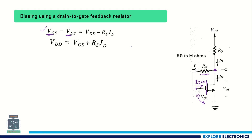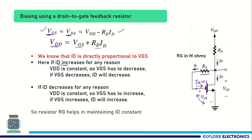Rearranging the expression, VDD equals VGS plus ID·RD. Now if ID increases for any reason, VGS decreases to keep VDD at a constant value. Because VGS decreases, ID also decreases and returns to the normal operating point. Similarly, if ID decreases, VGS increases, which causes ID to increase again and return to the normal position. This is how RG keeps ID constant by maintaining VGS and VDS at the operating point.